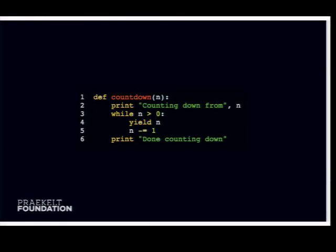It starts with looking at a generator. A Python generator is probably one of my favorite Python things. Whenever it comes across a yield statement, it suspends execution of that function and produces the value. This is basically just a counter — you give it a countdown, and whenever it hits zero it just stops and says 'done counting.' As soon as you iterate through it again, it continues where it left off. It's like a loop you can pause.